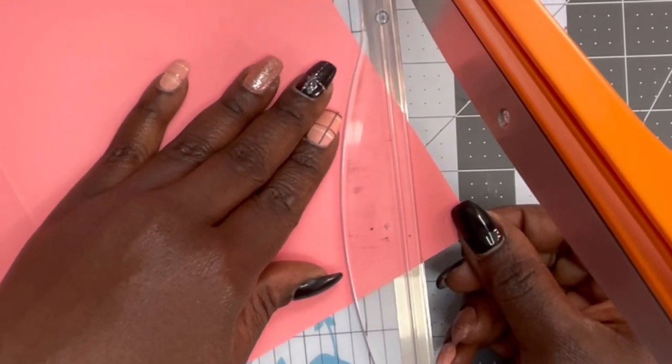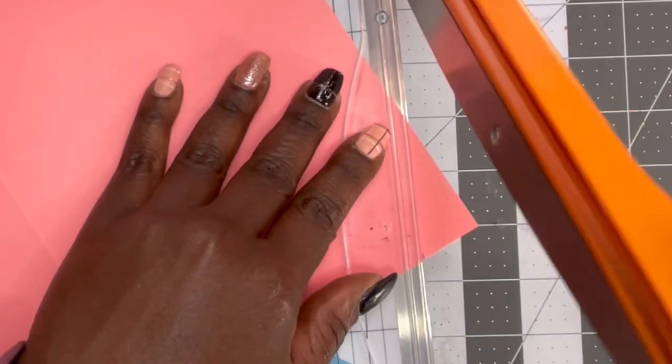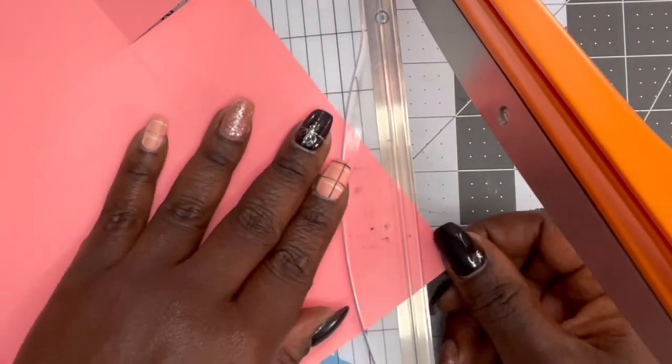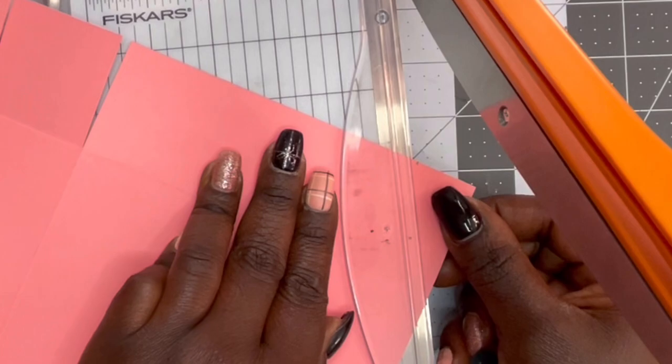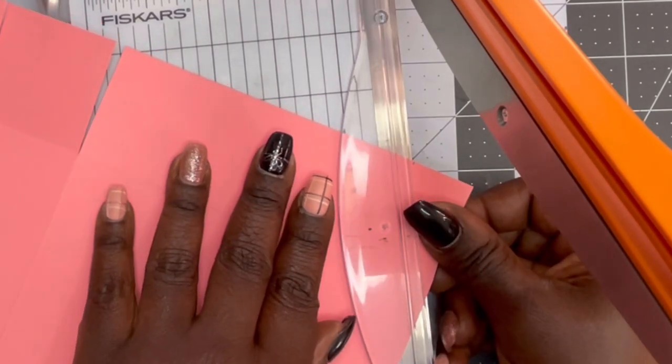Now you can use the scissors or you can use your paper trimmer and you're going to line it up from where you marked it from and you're going to go all the way up to that corner of the actual score line and you're going to cut it at an angle.